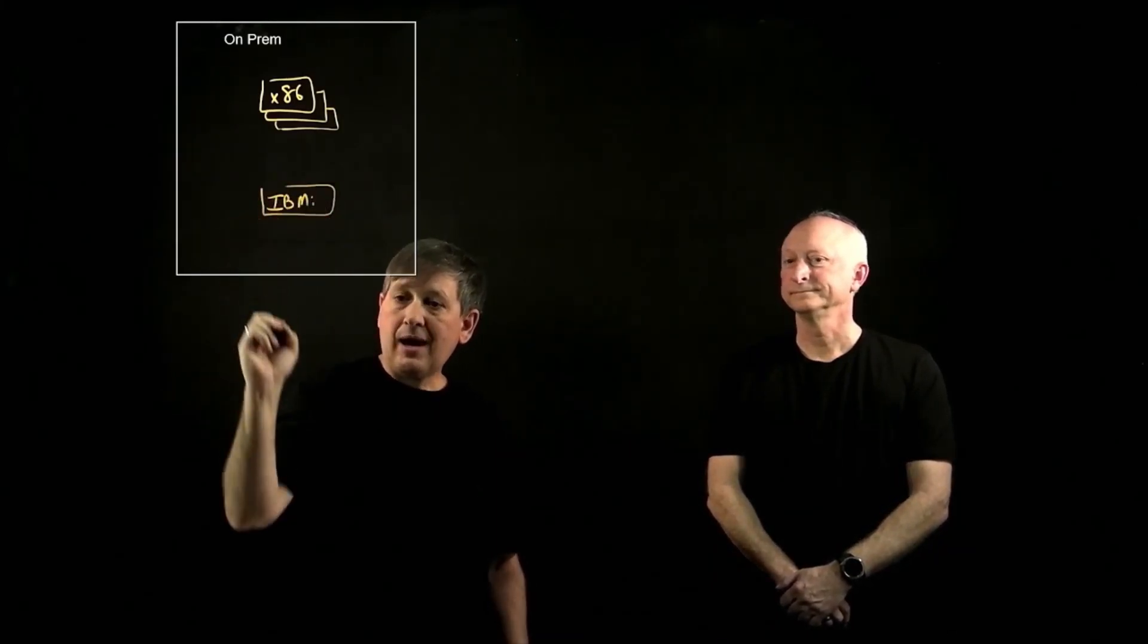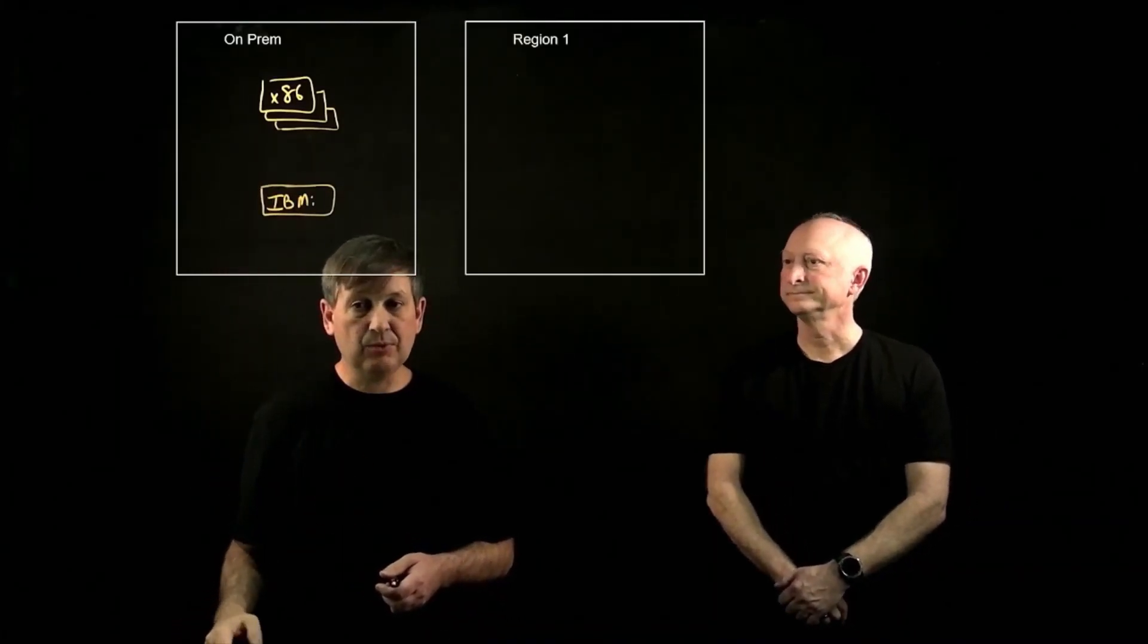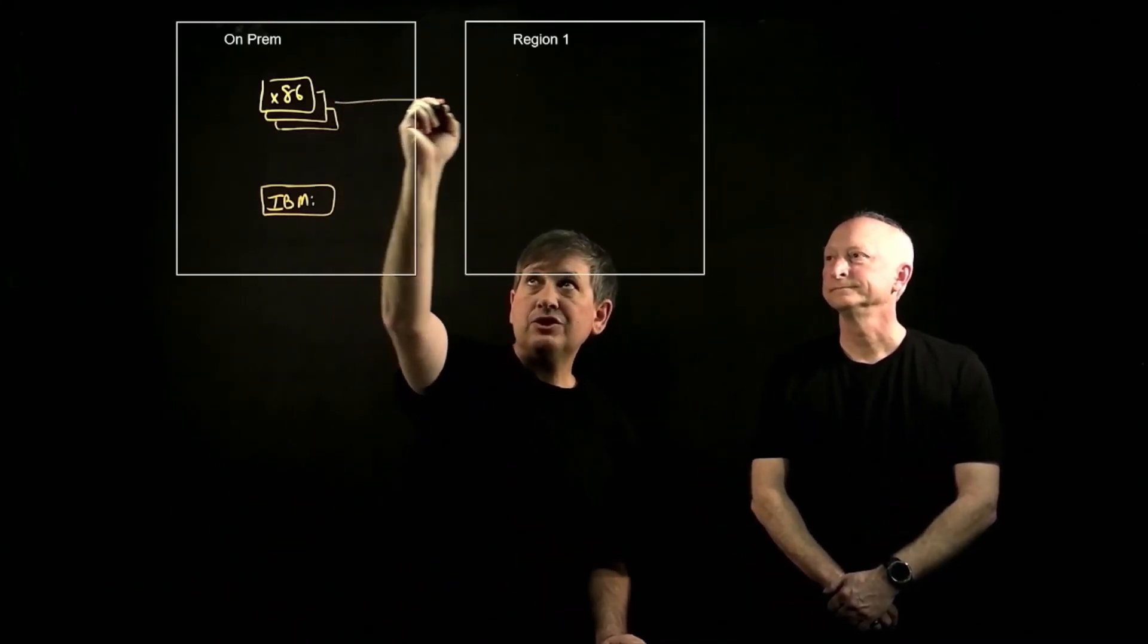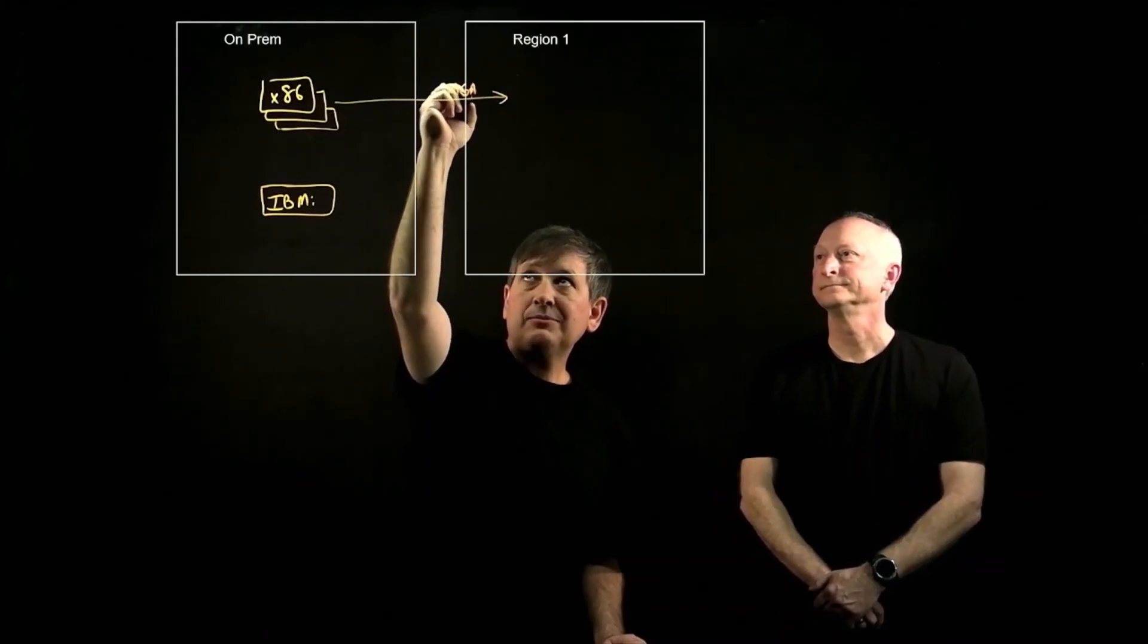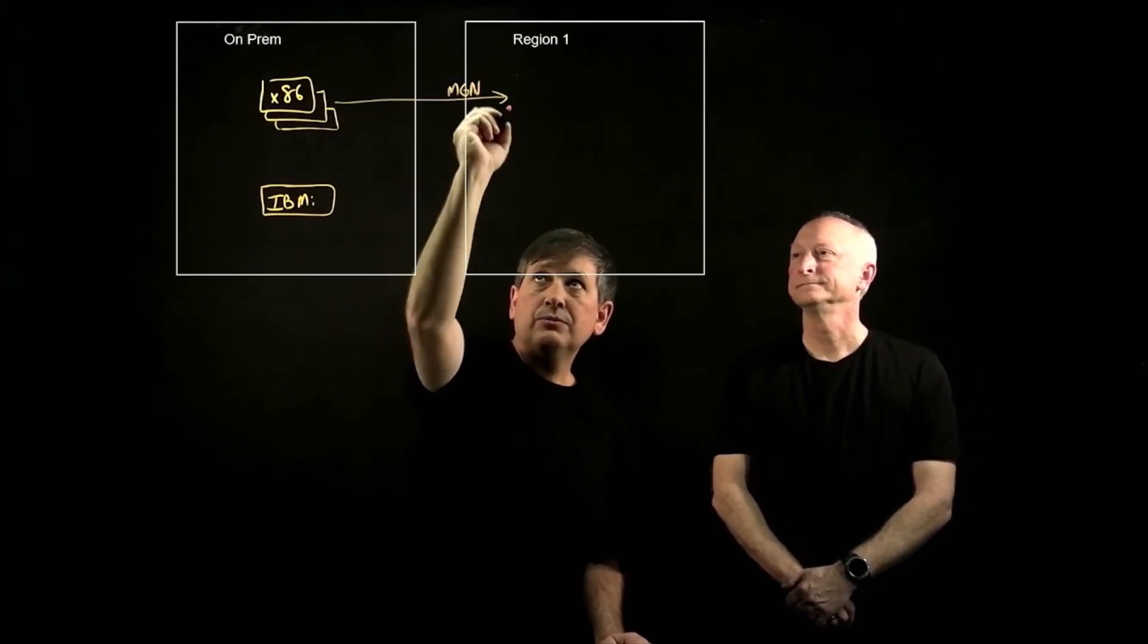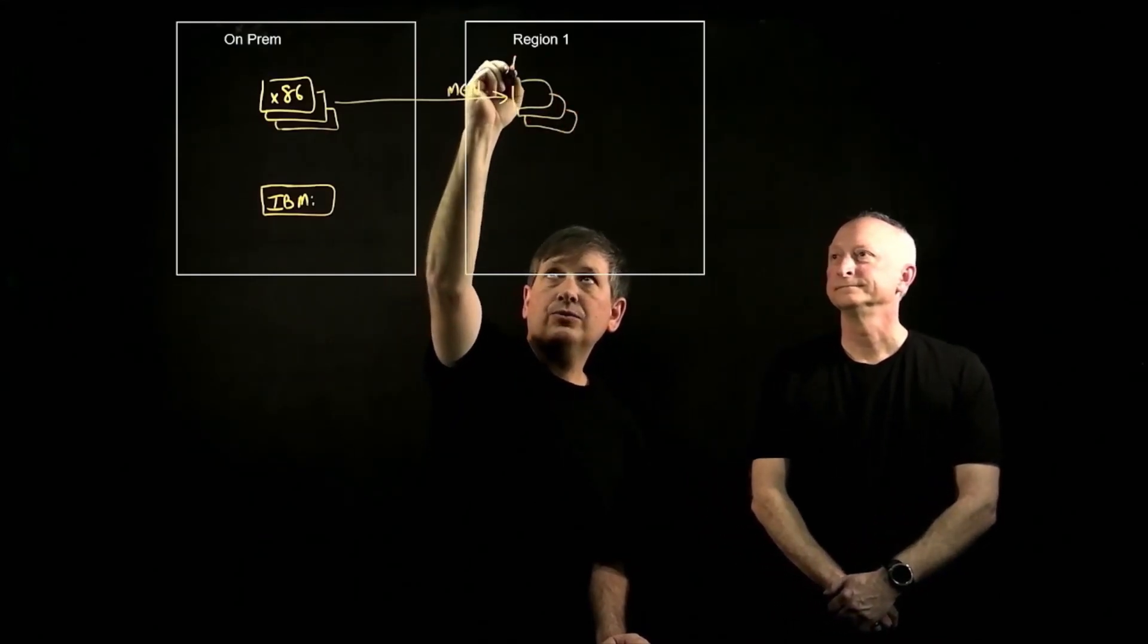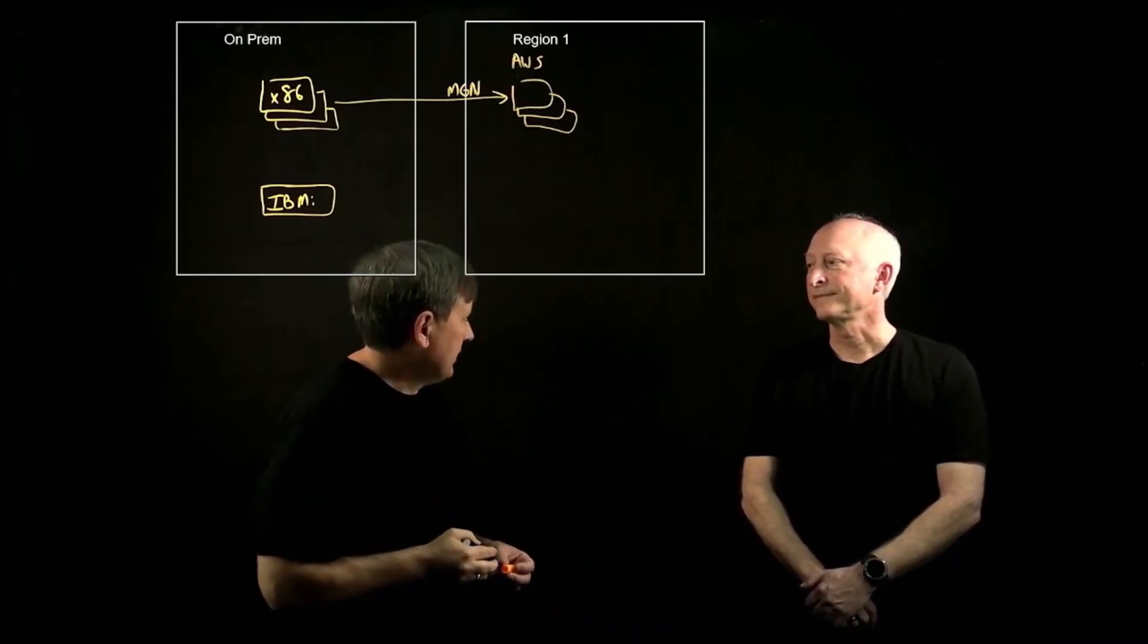I know how I can move these x86 workloads to AWS. I can use my MGN service, my AWS migration service, to move them over and replicate them right into AWS. But what do I do with this IBM i box, Dave?